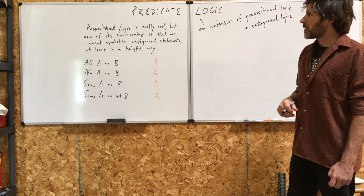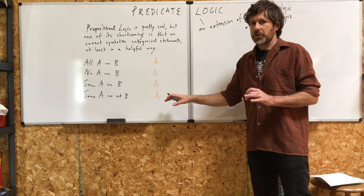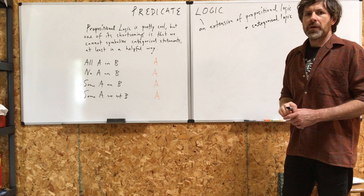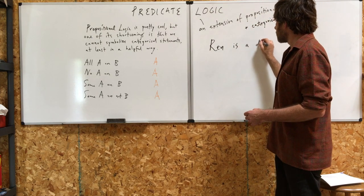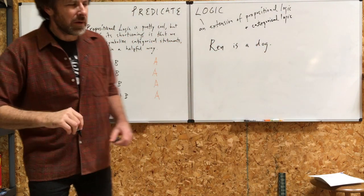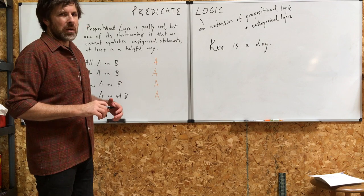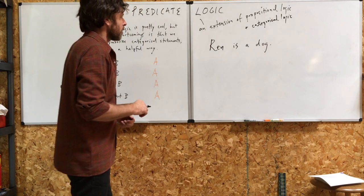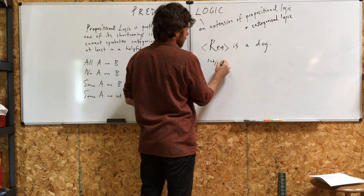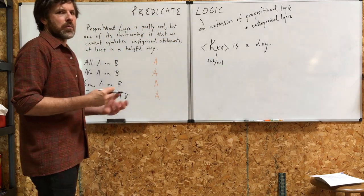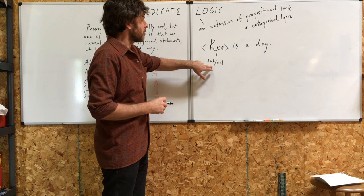I'm going to begin today by talking about how to translate, how to symbolize statements into predicate logic. And you'll see its power — it goes far beyond categorical logic. I'm going to begin with a simple statement: 'Ren is a dog.' You saw a video of Ren in a couple of these YouTube videos — he's the smaller one. Now, Ren is the subject. Why? Because we're really talking about Ren — this individual.